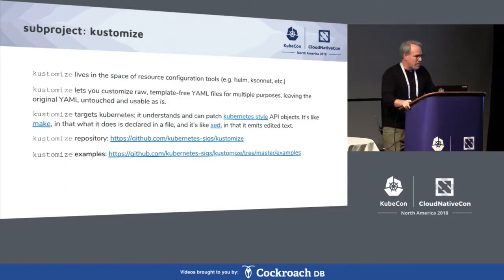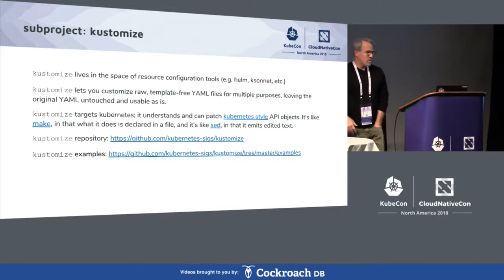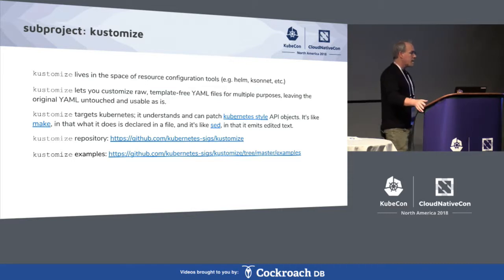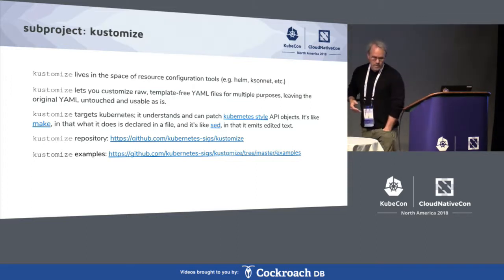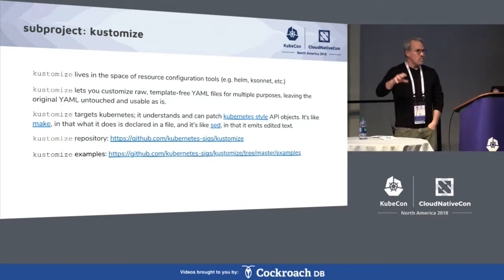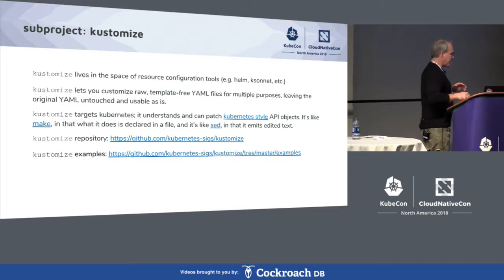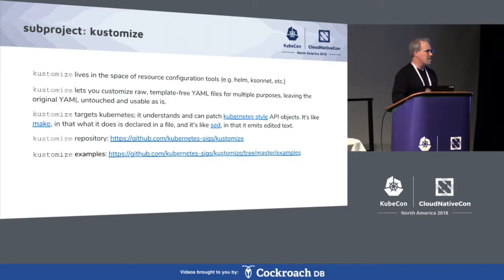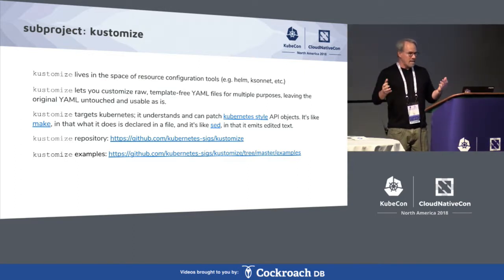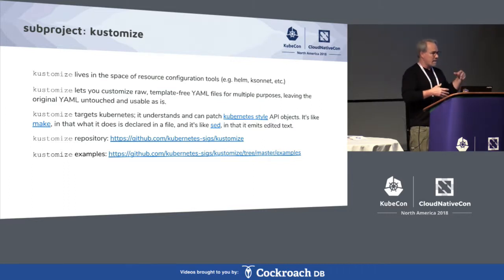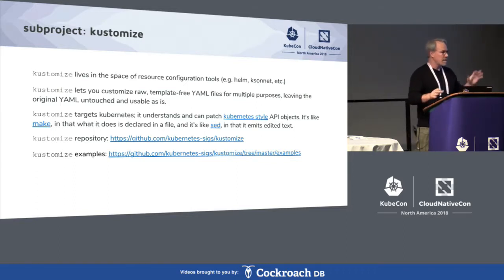The third sub-project that SIG CLI is responsible for is relatively new, and I'm going to spend a few minutes going over it because it's so new and most people don't have any context. It's called Kustomize. Kustomize lives in the space of resource configuration management tools — some other tools in that space are Helm or Ksonnet. Kustomize has a different approach to resource management; whereas Helm and Ksonnet do their configuration management through templating, Kustomize uses patches so that you don't have to modify your YAML.